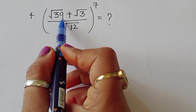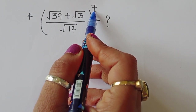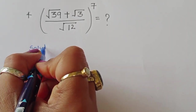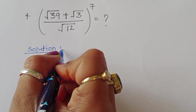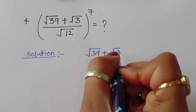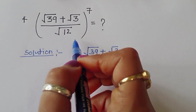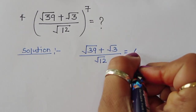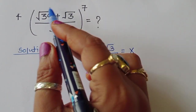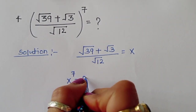The question is: given (√39 + √3) / √12, raised to the whole power 7, we have to find the value of this term. If we consider this term equal to x, then we have to find the value of x⁷.